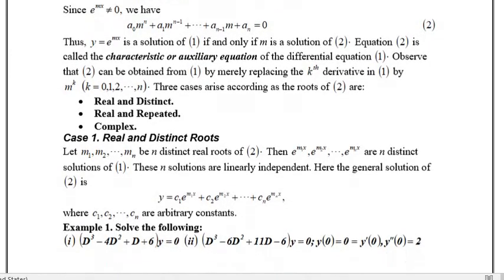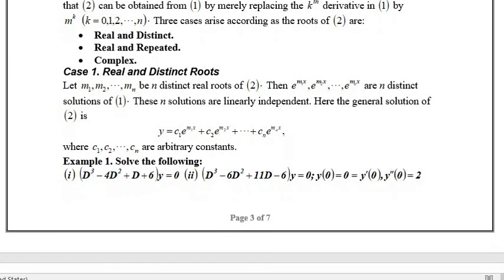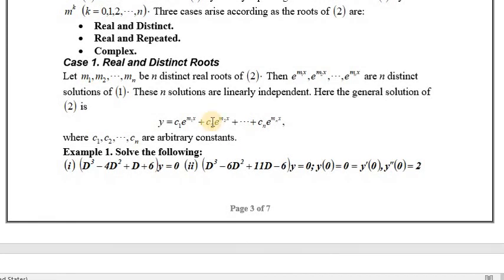Now when we have a quadratic or cubic equation, three cases arise according to the roots. In factorization we have roots, and there are three cases. One is that roots are real and distinct. Roots are real and repeated. And third, the roots are complex. So the first case, when roots are real and distinct, the solution will be y equal to c1 e^(m1x) plus c2 e^(m2x) plus cn e^(mnx).